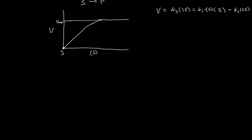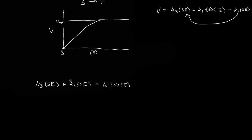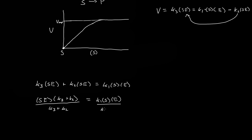Moving terms over, we get K3[SE] plus K2[SE] equals K1[S][E]. Factoring out SE gives SE times (K3 + K2) equals K1[S][E]. Dividing both sides by (K3 + K2) gives us SE equals K1[S][E] divided by (K3 + K2).